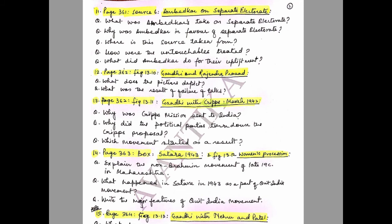Question 11: Page 361, Source 6 — 'Ambedkar on Separate Electorate.' Questions: What was Ambedkar's take on separate electorate? Why was Ambedkar in favor of separate electorate? Where is the source taken from? How were the untouchables treated? What did Ambedkar do for their upliftment?